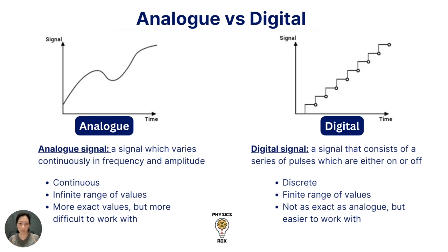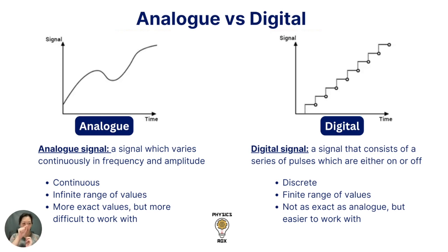Comparing that to digital signals: a digital signal consists of a series of pulses which are either on or off. As you can see in the graph, it's on, off, on, off. Because of this on-off nature, digital signals are discrete — the range of values is finite, and while they may not be as exact as analog signals, they are a lot easier to work with.